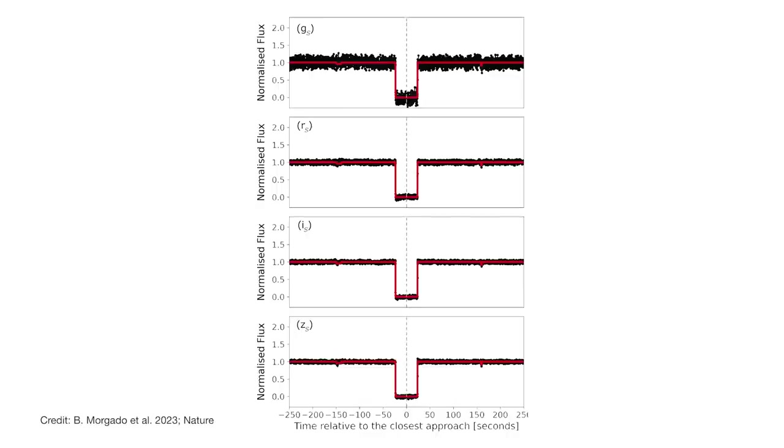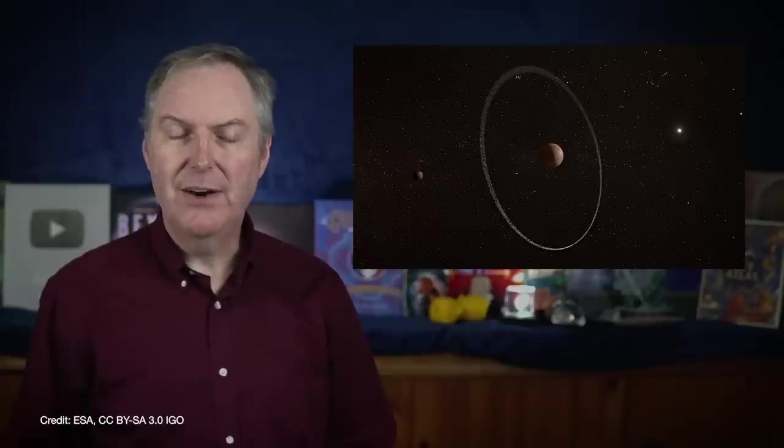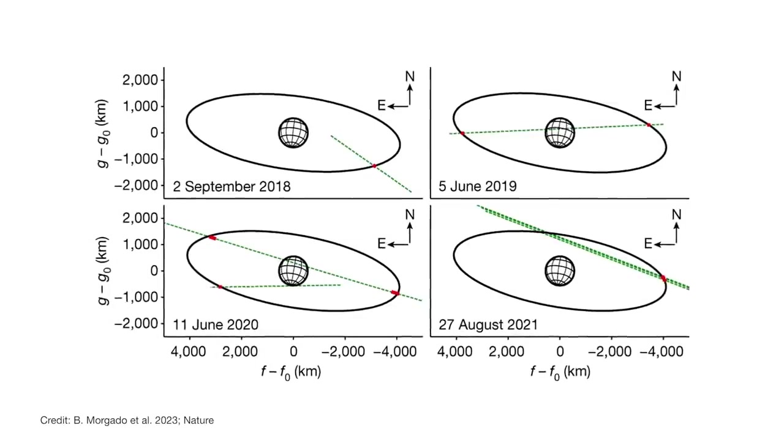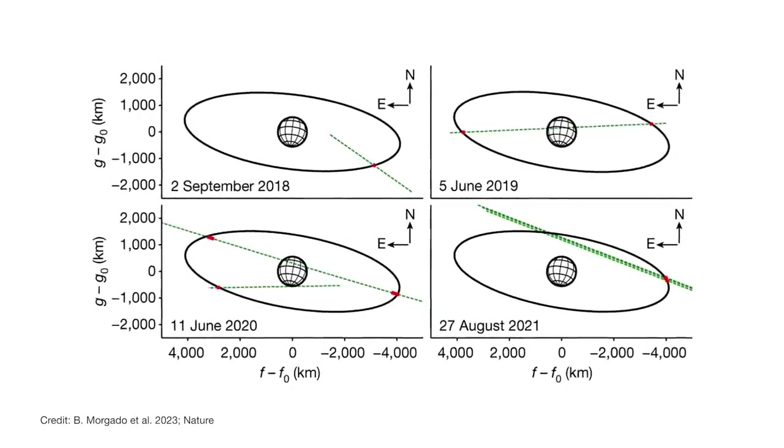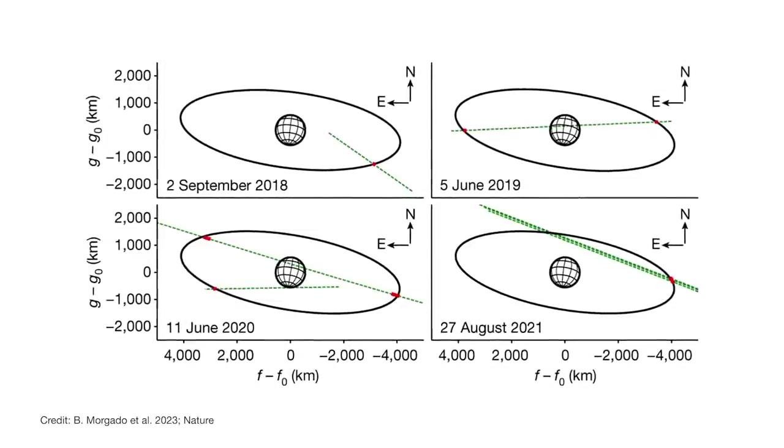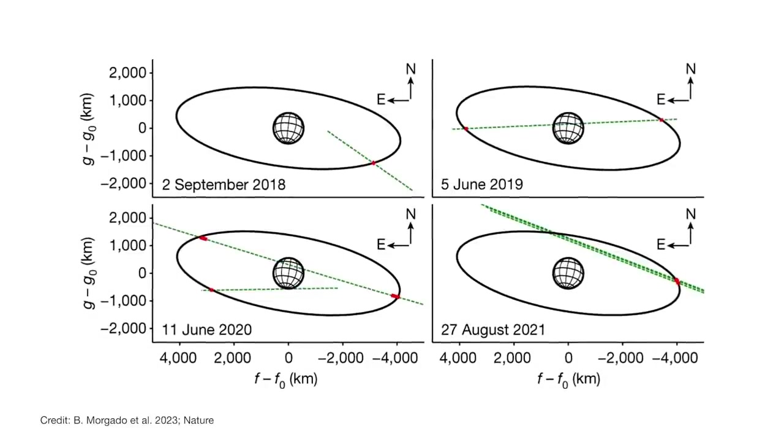Quaoar is small, so the whole occultation lasted for less than a minute. But when they went back and looked at the light curve, they noticed that there were these two tiny dips in the starlight just before and after the occultation. The best way to explain those dips are that Quaoar has a ring. Even better, they went back and inspected the data from previous occultations going back to 2018, and sure enough, they found that there were those same pre- and post-occultation dips in those light curves as well.